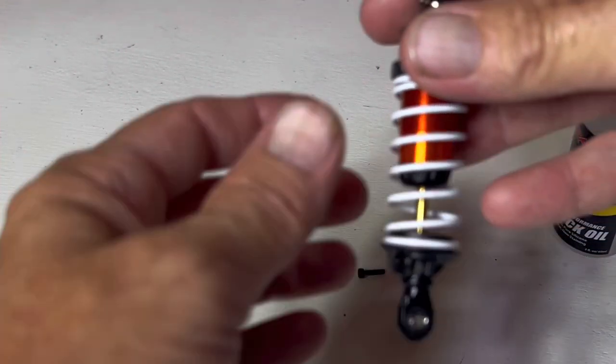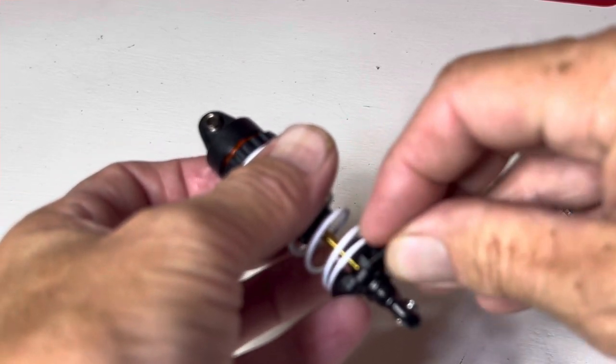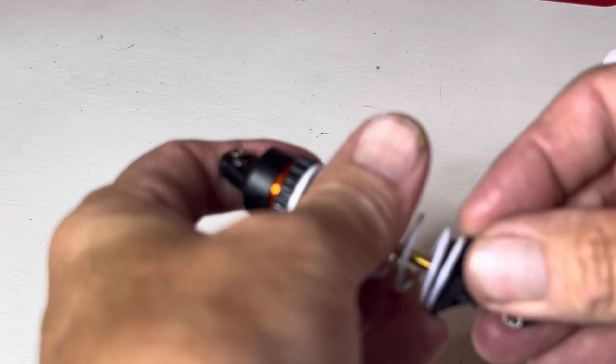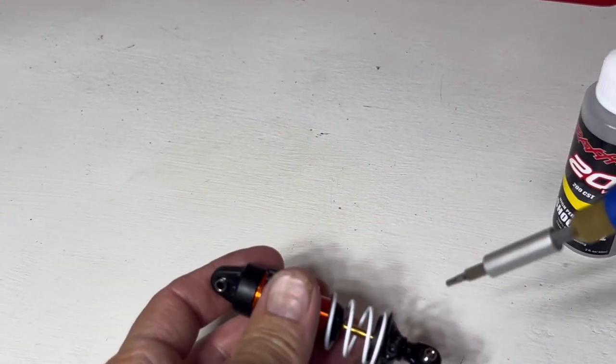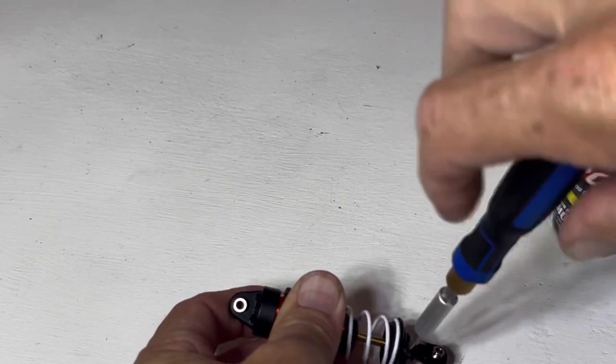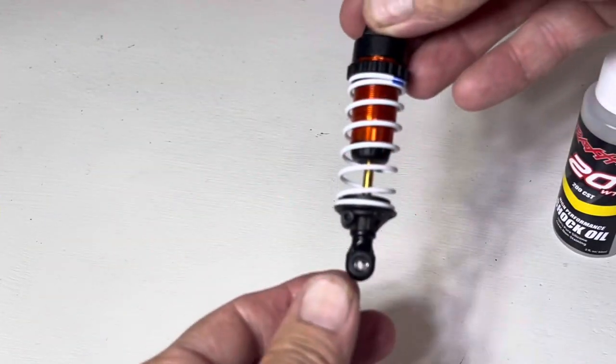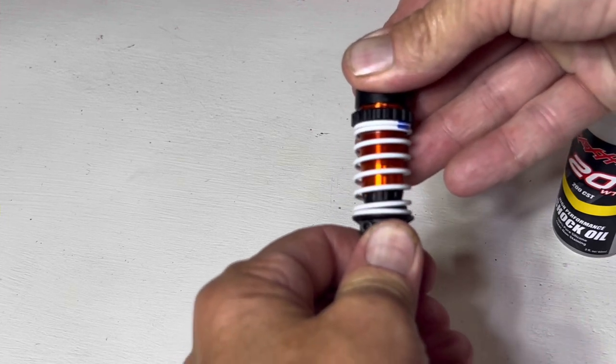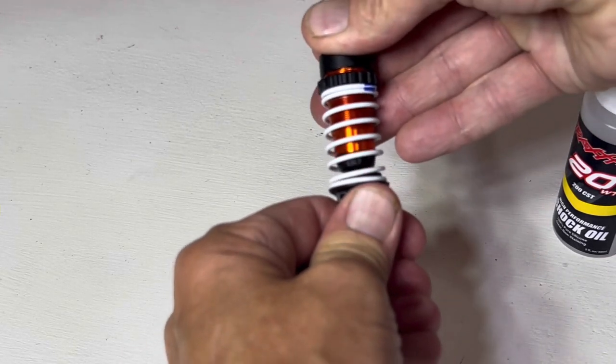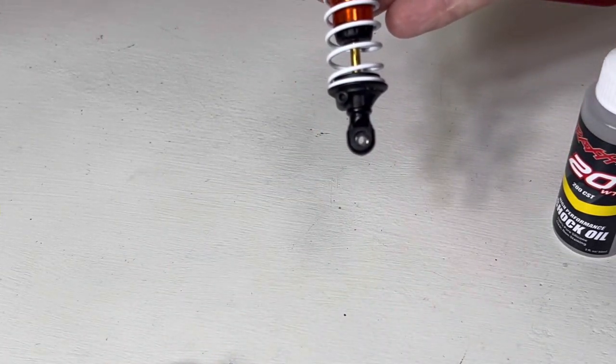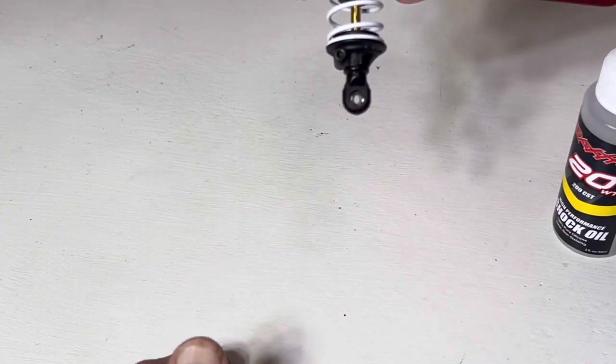There we go, we have it in place. Take your little screw, put it back in and tighten it down. And there you have it, a nice new oil filled shock. As you can see, it compresses down nicely all the way. Don't have to worry about it.